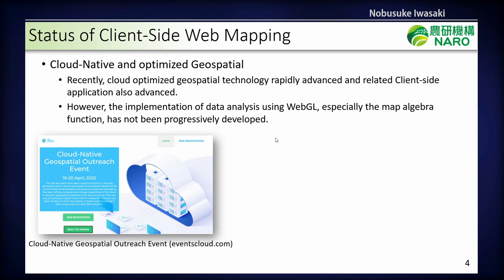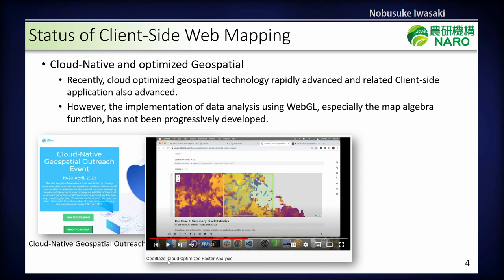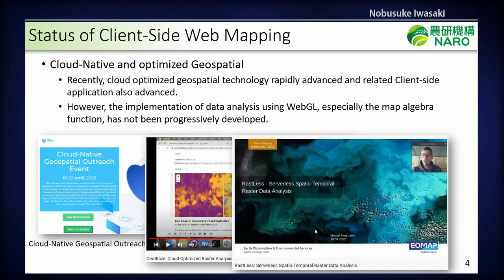Nowadays, cloud-native and optimized geospatial data formats are rapidly advancing in development. Related client-side applications are also being developed. For example, this is GeoVerse, a cloud-optimized raster analysis tool. And also this is Rustless, which is used to analyze spatial and temporal raster data, also on the client-side.